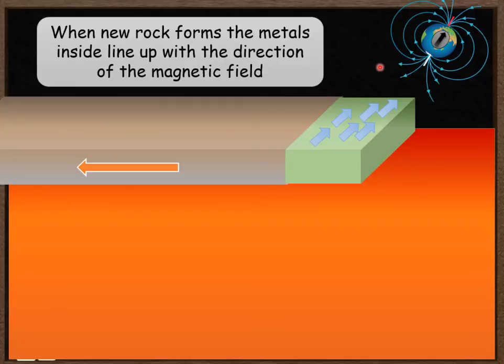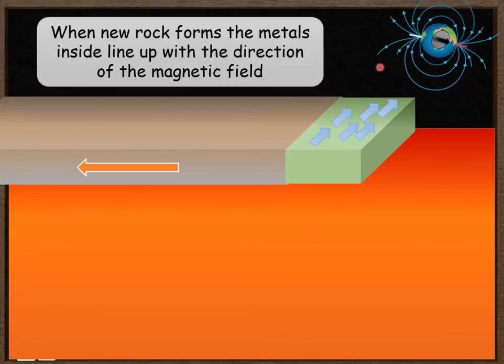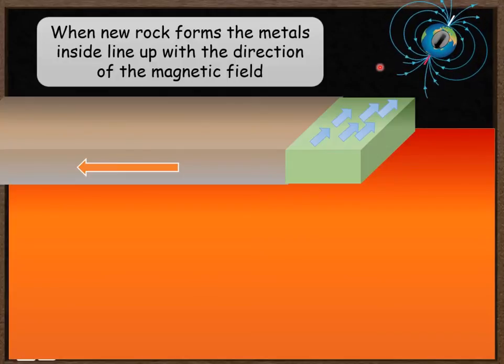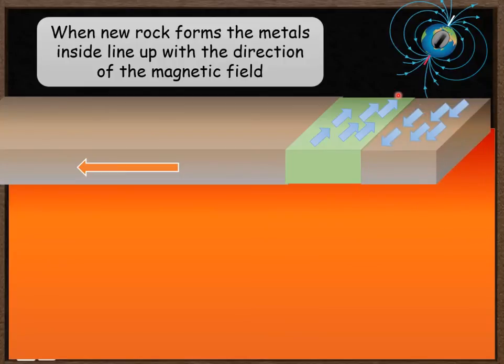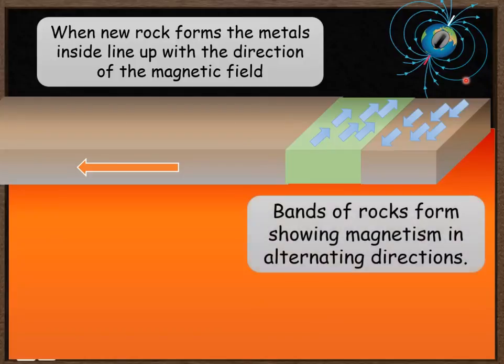What then happens is about 100,000 years later, maybe the Earth's magnetic field switches in direction. So the next bit of rock that is made is going to exhibit magnetism in the opposite direction because those magnetite particles are now aligned in the opposite way with the current magnetic field. And that process continues.